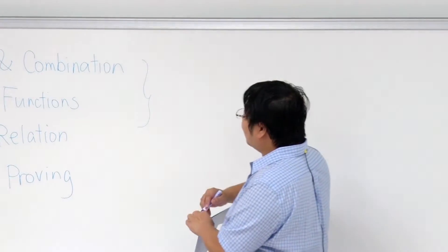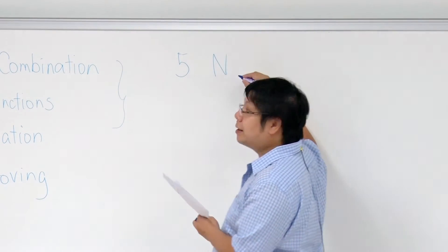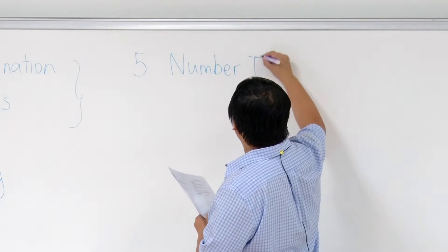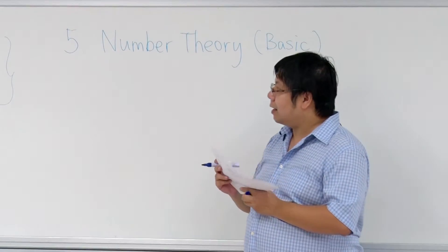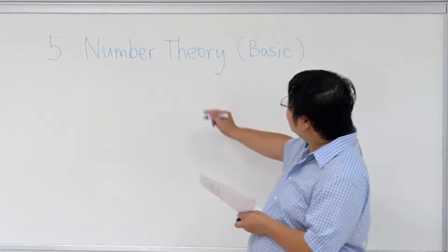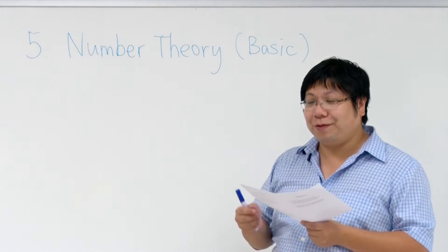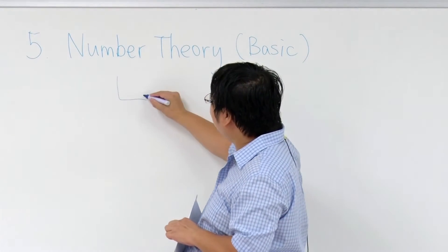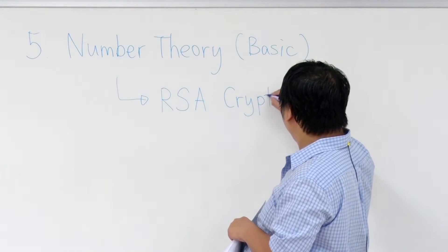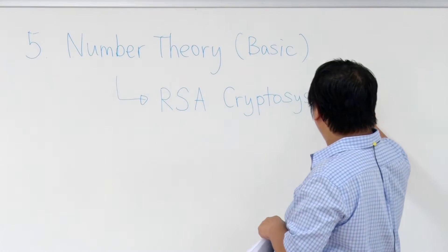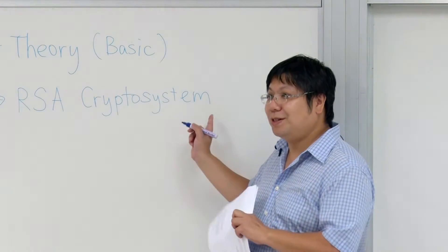After that, we will talk about some very basic number theory. This basic number theory will lead us to a very powerful cryptography system called RSA. We will introduce the RSA cryptosystem. This system is very powerful but also conceptually easy, so I think everyone here should know about it.